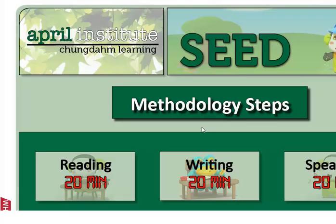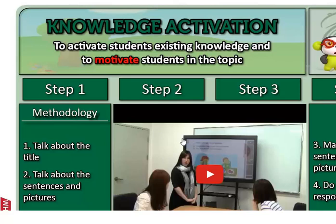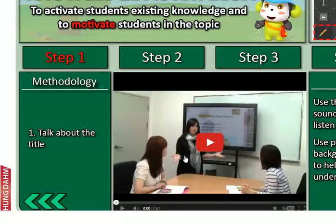When you get here, press play. If by chance it doesn't pop up right away, just refresh it — sometimes the browser could be slow. From here, you can select reading, writing, or speaking, so click on one. When you see the training itself, on the sides are the steps for a methodology. You can play the video and use the arrows to move backwards and forwards. If you want to see specifically what to do in each step, click the step itself and it'll be a shorter video for that.